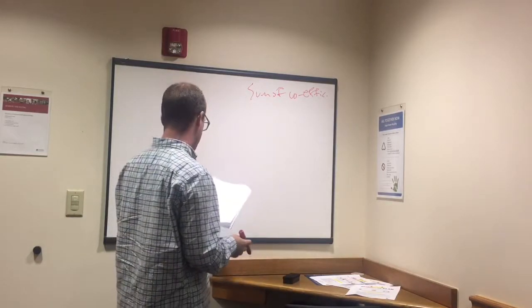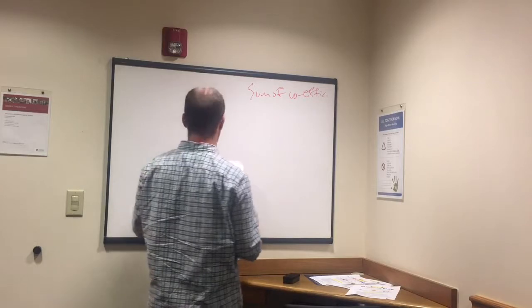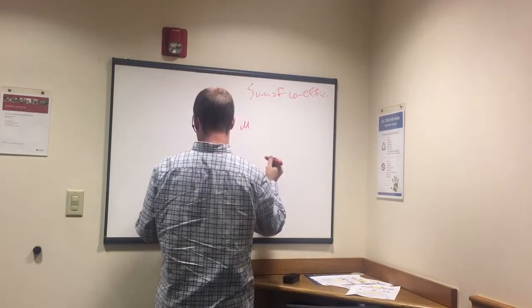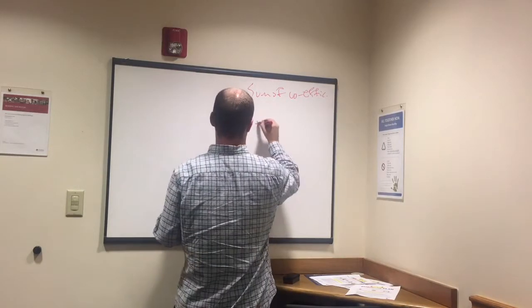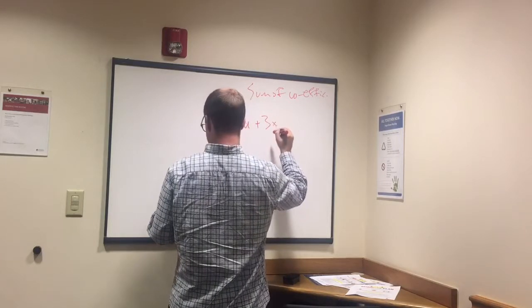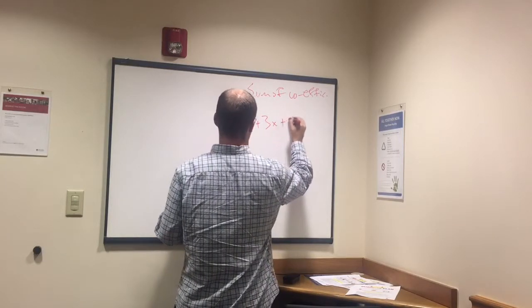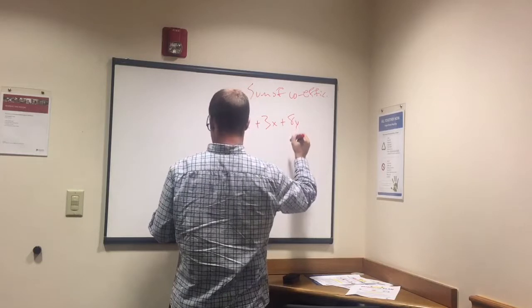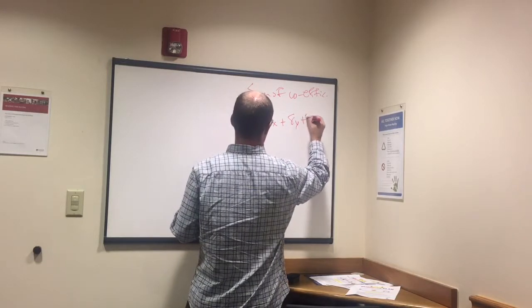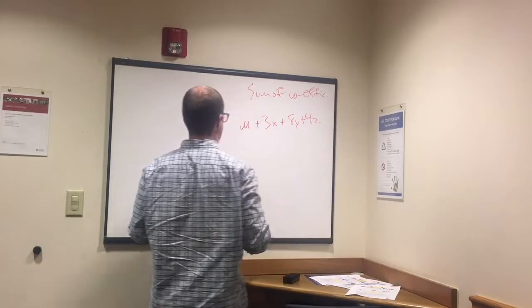If you had the variable u plus 3x plus 8y plus 4z and they said what is the sum of the coefficients, it's just the number in front of each of those variables and add them up, that's all that means.